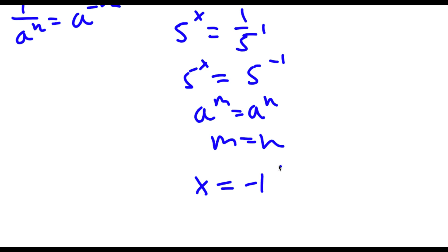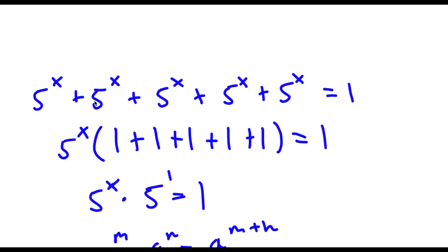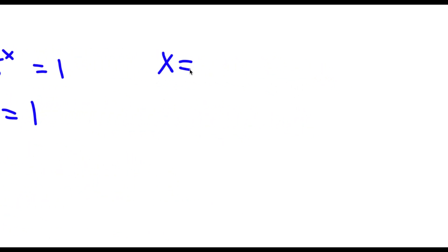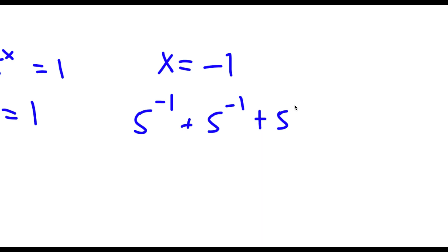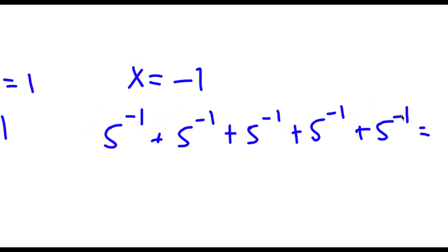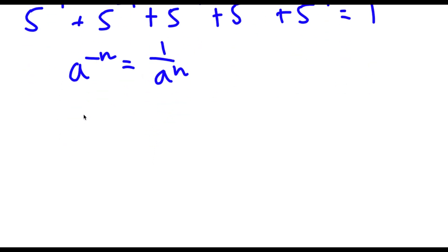Now to check: our original equation was 5 to the power of x, five times, equal to 1, with x equal to negative 1. So I have 5 to the power of negative 1, five times, equal to 1. Using the rule that a to the power of negative n equals 1 over a to the power of n, 5 to the power of negative 1 equals 1 over 5.